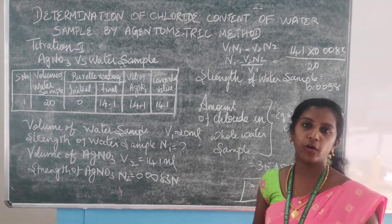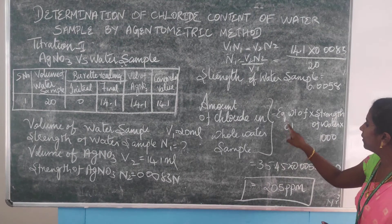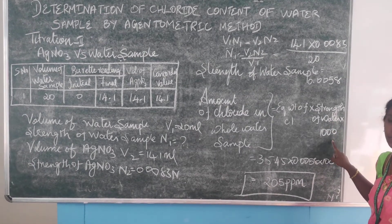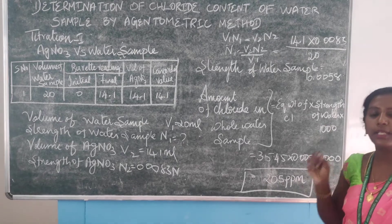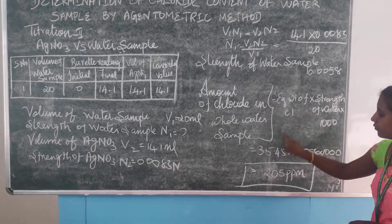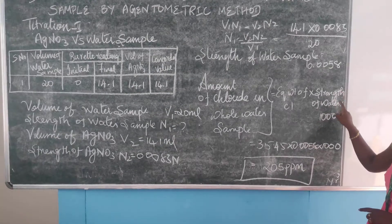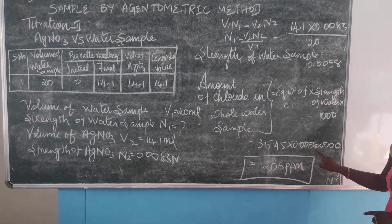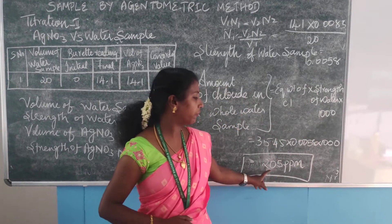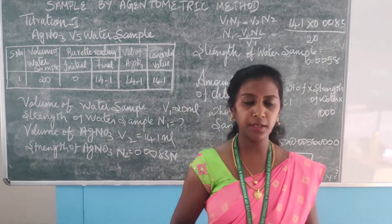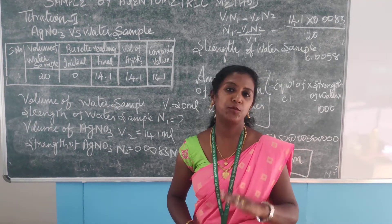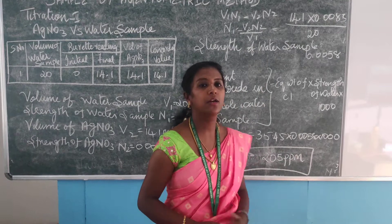We have to find the total amount of chloride ions present in 1 litre of the water sample. The formula is: equivalent weight of chloride ions × strength of water sample × 1000. We multiply by 1000 because we are calculating in terms of litres. The equivalent weight of chloride ion is 35.45, strength of water sample is 0.0058, multiplied by 1000. Finally, the answer is 205 ppm. The level of chloride in the water sample is 205 ppm. The permissible level of chloride ions in water can be up to 250 ppm, and we have received the answer as 205 ppm.